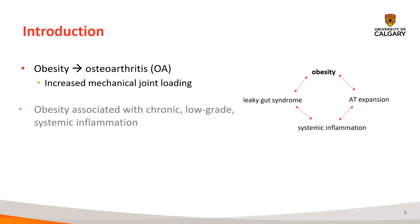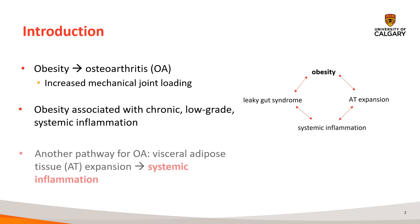Obesity has actually been associated with a chronic, low-grade systemic inflammation. This inflammation has then become a postulate for musculoskeletal degenerative disorders, such as OA. There are a couple mechanisms for this inflammation, but the mechanism that was the focus of this study was adipose tissue expansion, specifically visceral adipose tissue expansion.